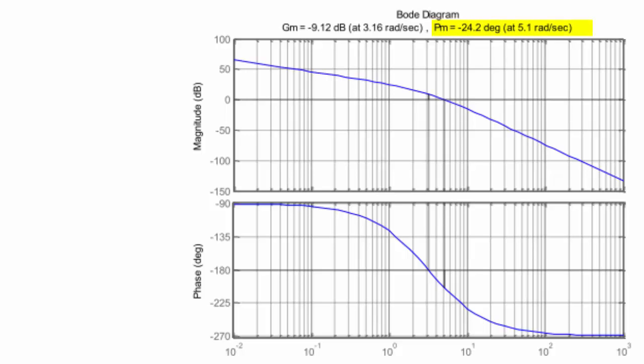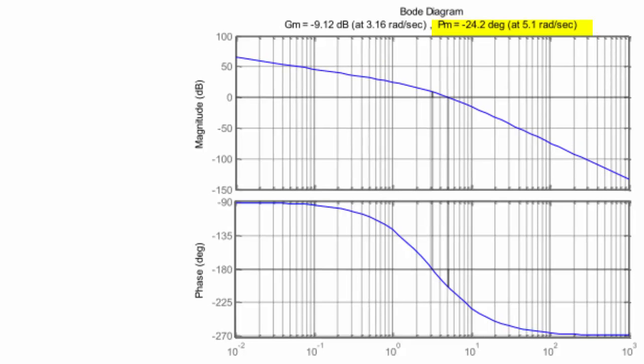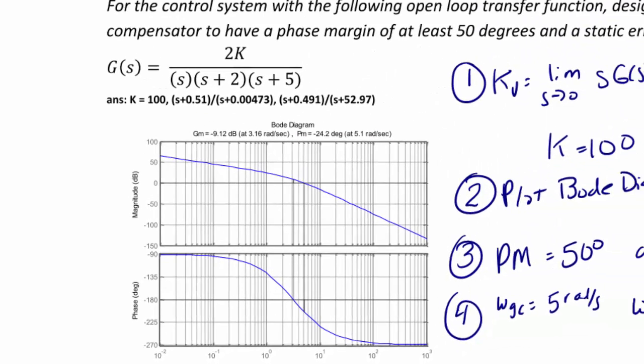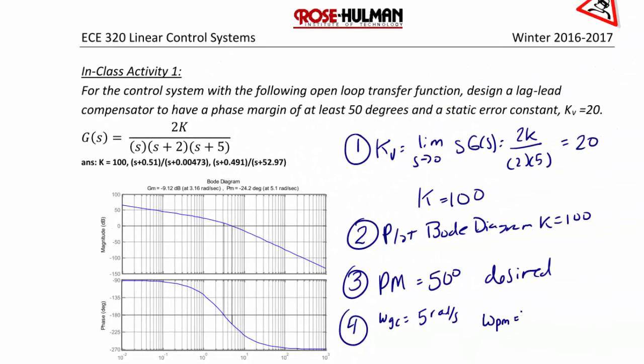is negative 24.2 degrees, and this is at omega gc equal to 5 radians per second. And since we are not given the settling time or the time to peak, we let omega pm equal omega gc which equals 5 radians per second.